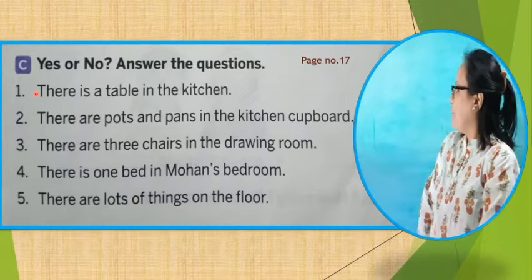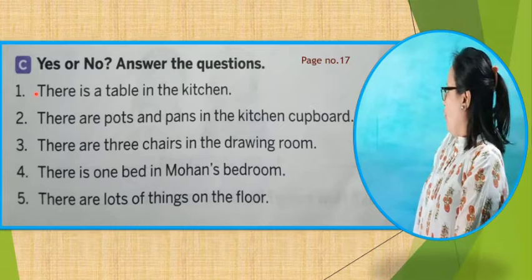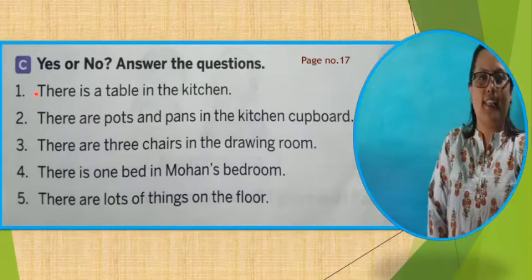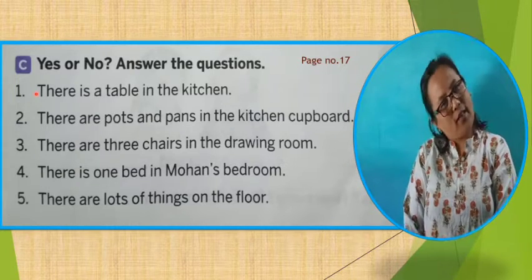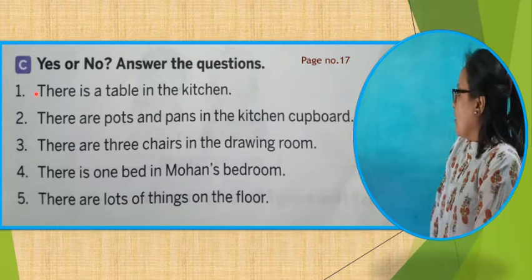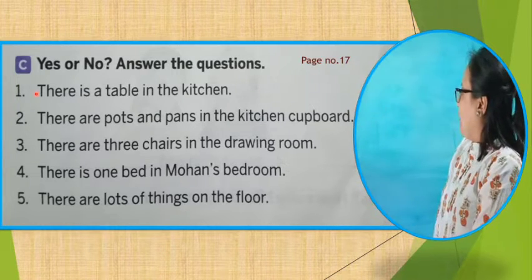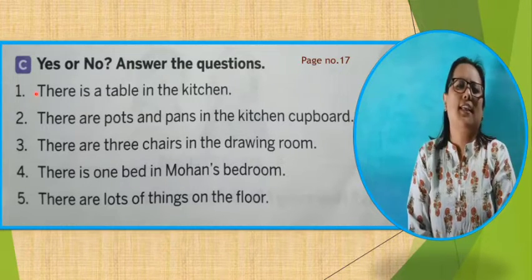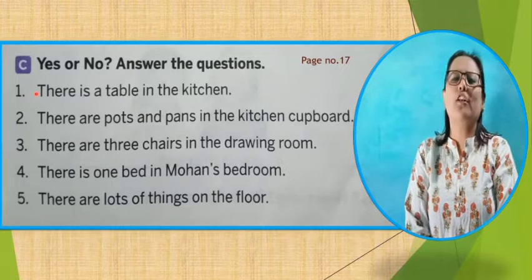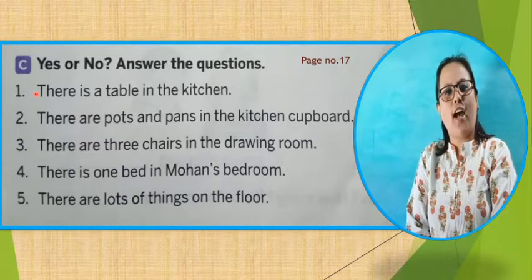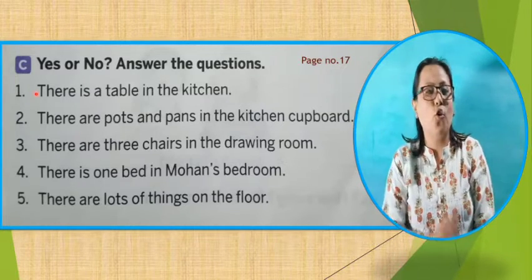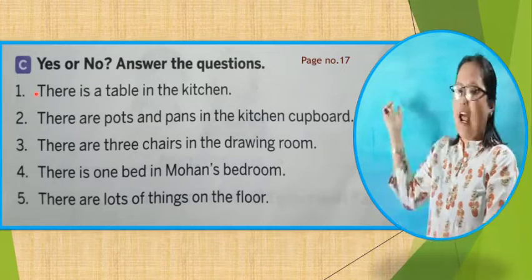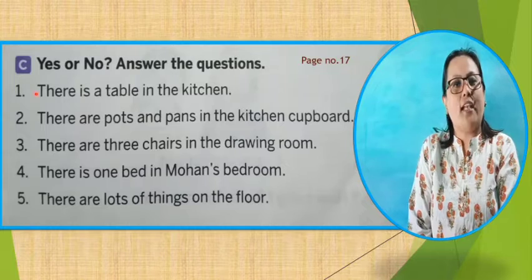Let's see the question. Answer in yes or no. Let's see number 1: There is a table in the kitchen. Was there a table in the kitchen in that story? What do you think — yes or no? The answer is no. There was no table in the kitchen. The table was in the drawing room. So our answer will be no.